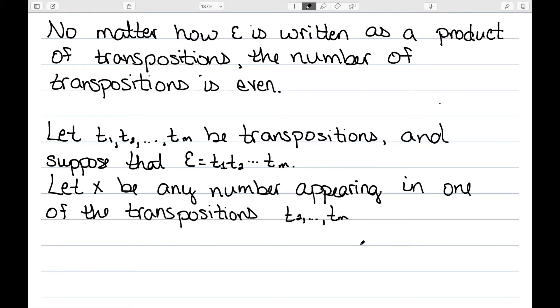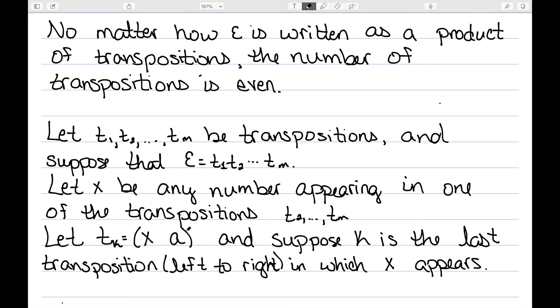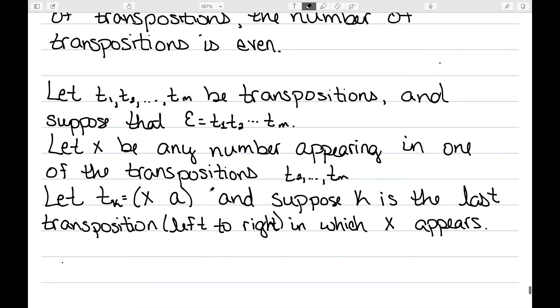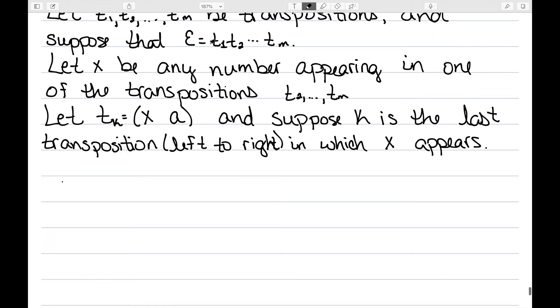I'm going to let x be any number that appears in one of the transpositions t2 all the way up through tm. So I'm going to ignore t1 and then pick any number that I see anywhere in the transpositions t2 through tm. Let's let tk be a transposition of the form xa, and we're going to suppose k is the last transposition, read left to right, in which x appears. So I'm going to take this product, read it from left to right and find the very last instance of my selected number x.